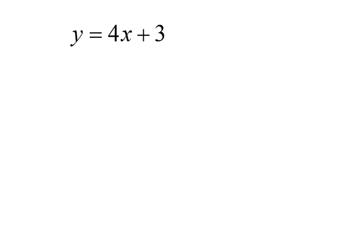So what I want to do is I want to make x the subject of the formula, so I want it to be x equals something. The first thing I need to do is move the 3 to the other side, so I can have y take 3 is equal to 4x. The reason why I did take 3 is because this is the opposite of plus 3.